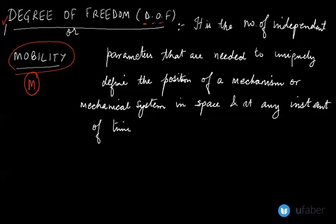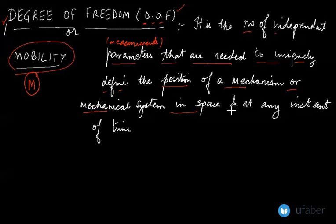Now let's start this video by defining what degree of freedom is. It is defined as the number of independent parameters, or we can also call them measurements. So the number of independent parameters or measurements that are needed to uniquely define the position of a mechanism or a mechanical system in space and at any instant of time. So how many parameters or variables you need to define a system, that is known as your degree of freedom.